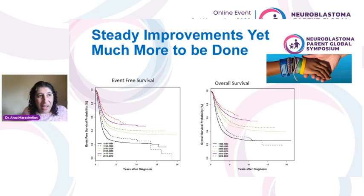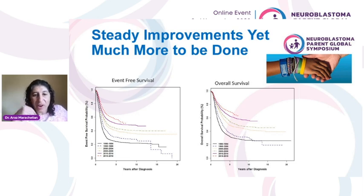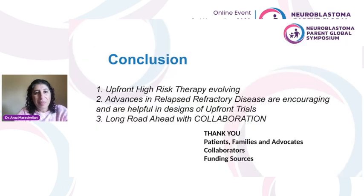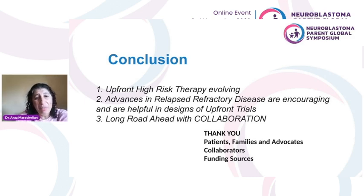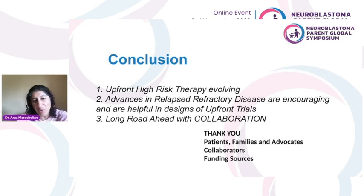The point is that we have been making steady progress. Each trial builds on the one before, and all of this building on each other has been raising our event-free survival and overall survival. Our therapies are really evolving — the relapsed refractory disease space is encouraging and also very helpful in designing our upfront trials. We do have a long road ahead, but that road will need collaboration with the whole group. I thank everyone here: patient families and advocates, collaborators, and our funding sources.